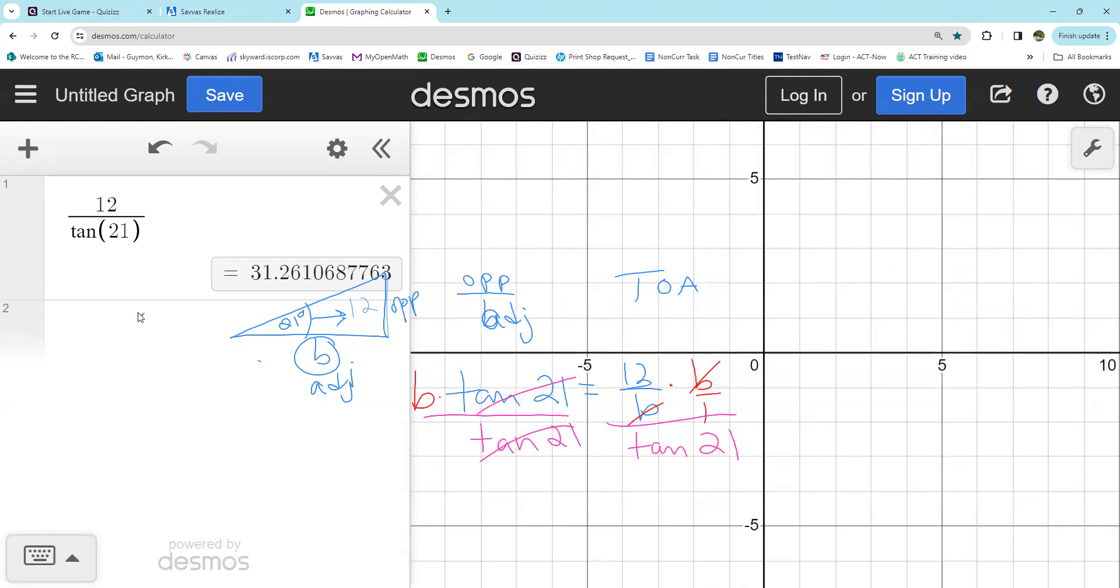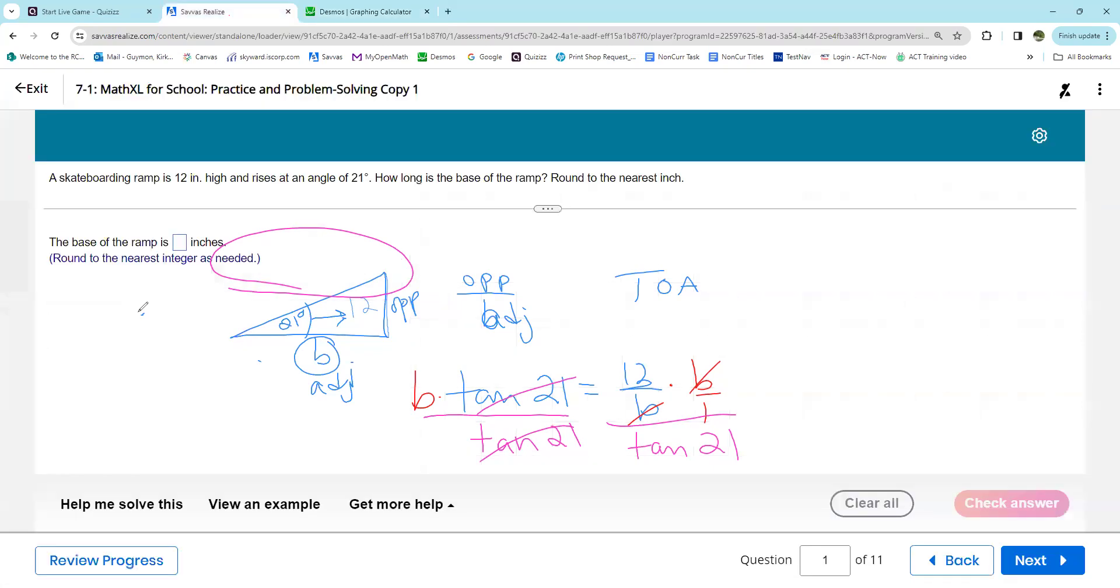So 31.26. 31 - what did it say to round to in that problem? Said to round to the nearest integer, so whole number - integer - the nearest whole number.